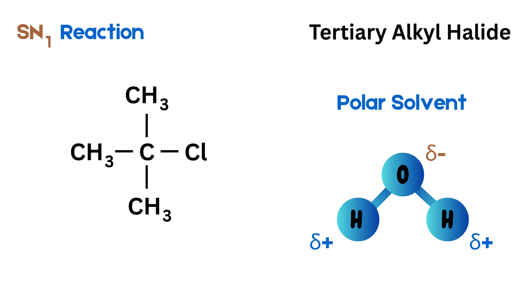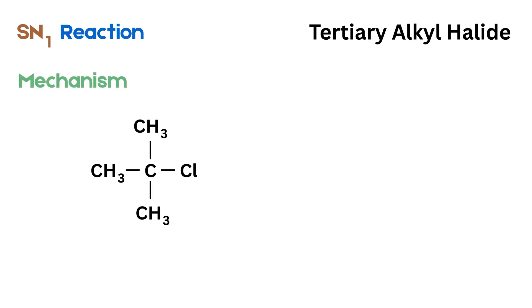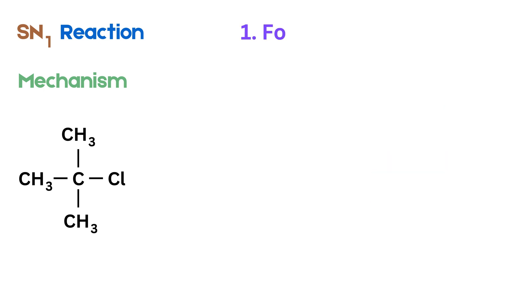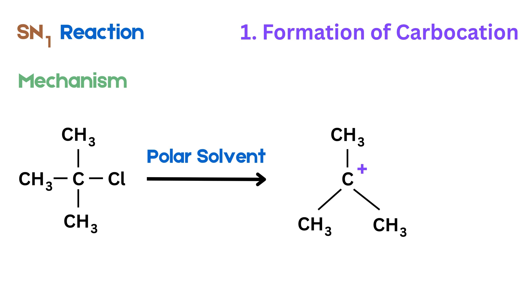Now let's understand the mechanism. The SN1 reaction happens in two steps. Step one is the formation of a carbocation. Take a tertiary alkyl halide and dissolve it in a polar solvent. The polar solvent helps to separate the halide, like chlorine, from the carbon. The bond between carbon and chlorine breaks. The chlorine leaves as a negatively charged ion and the carbon becomes a positively charged ion.